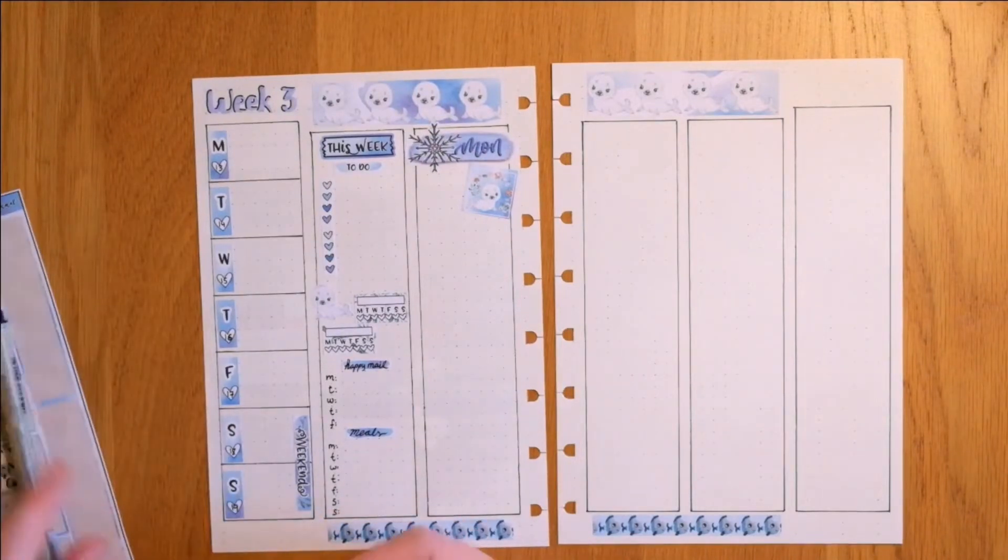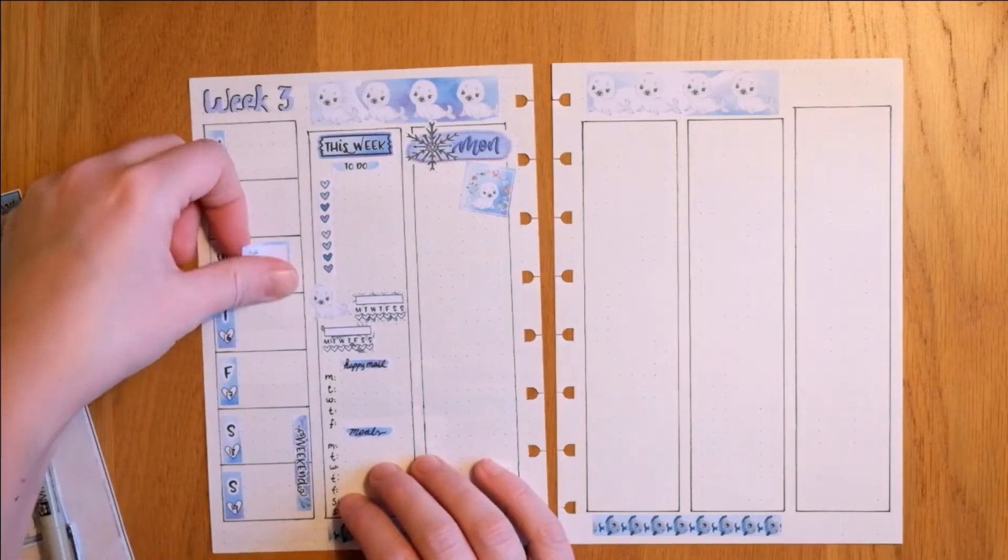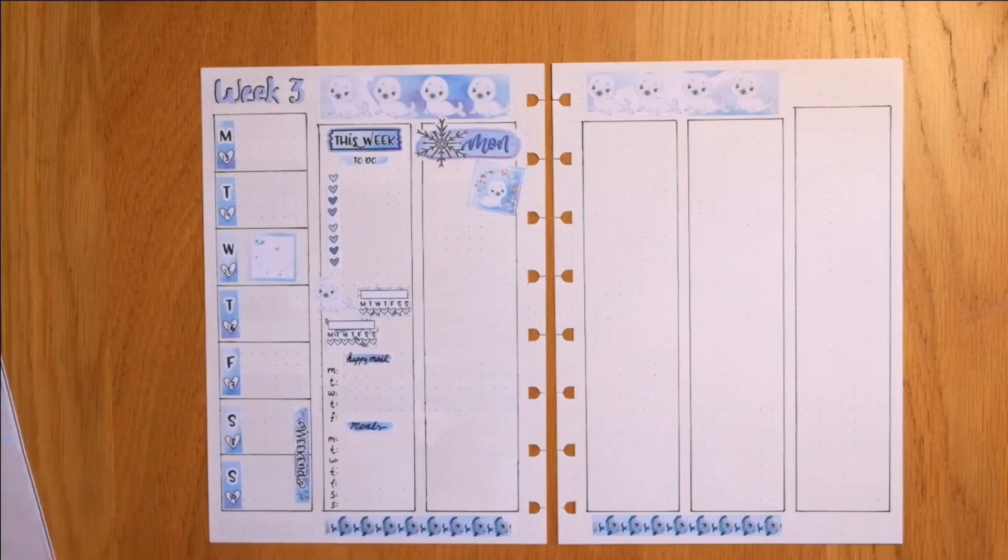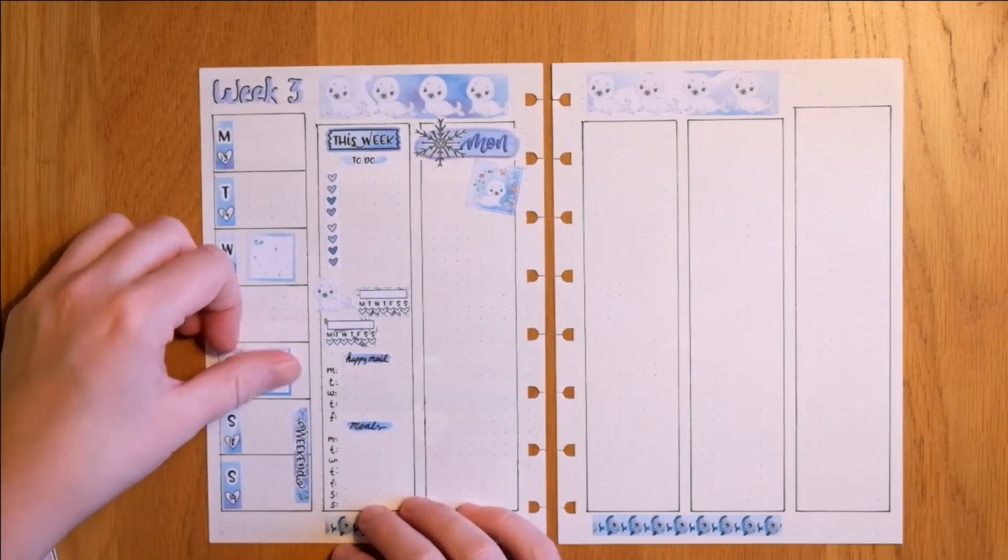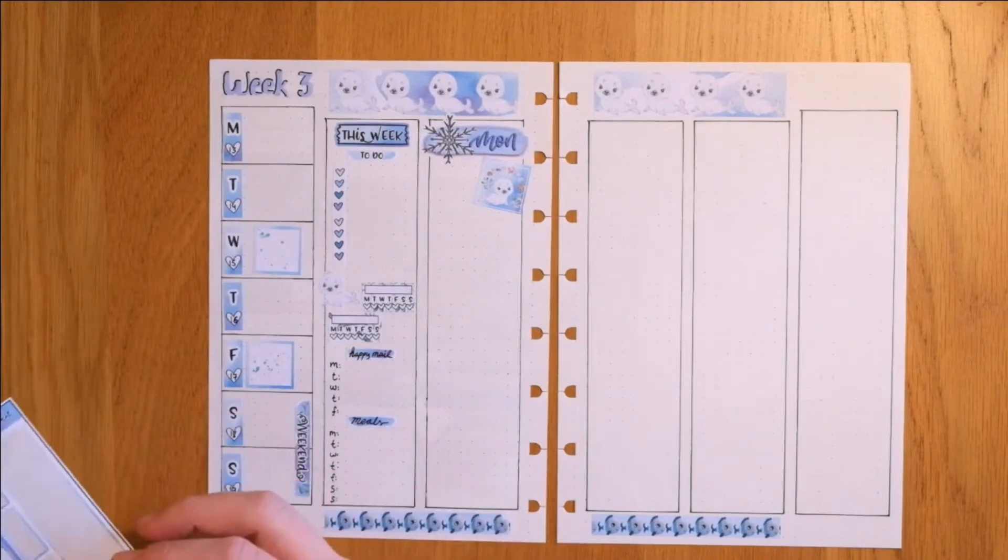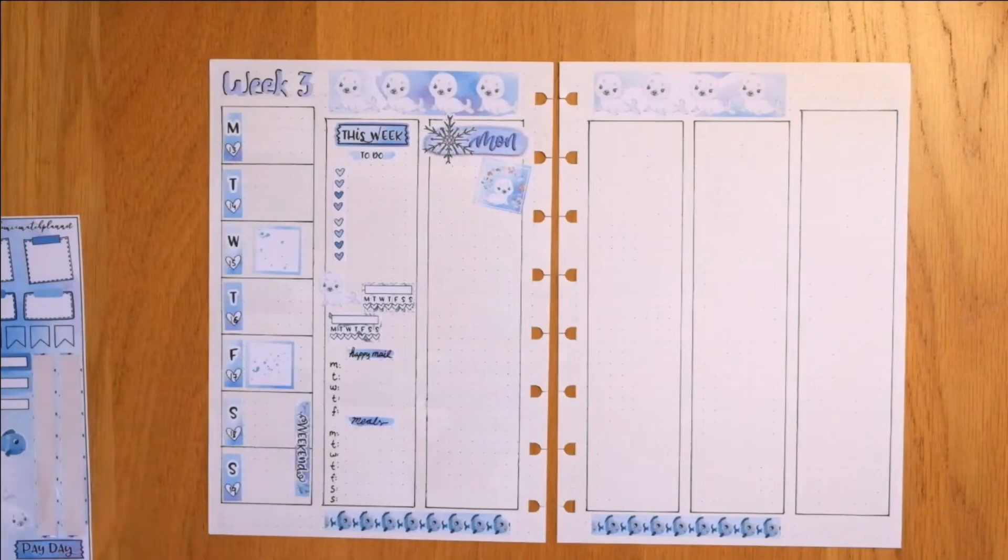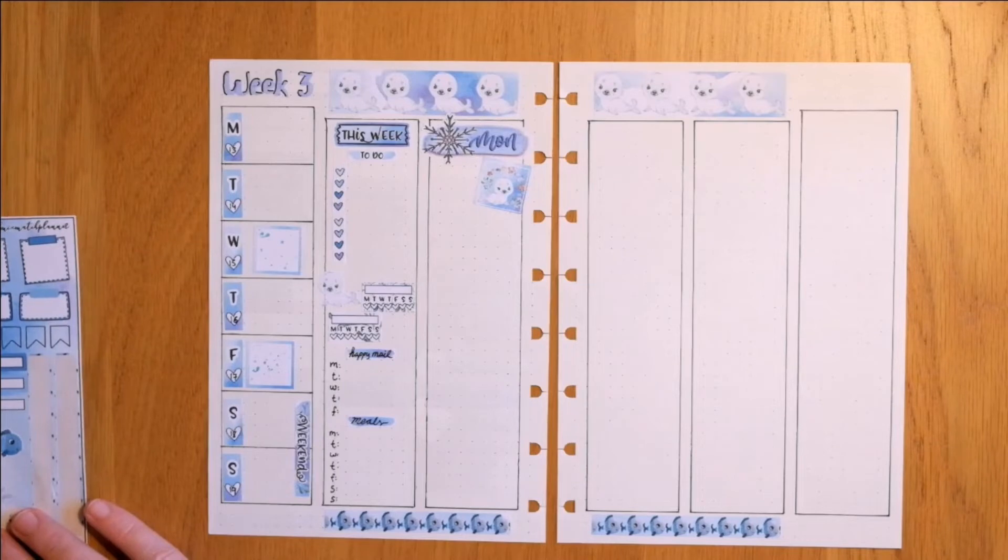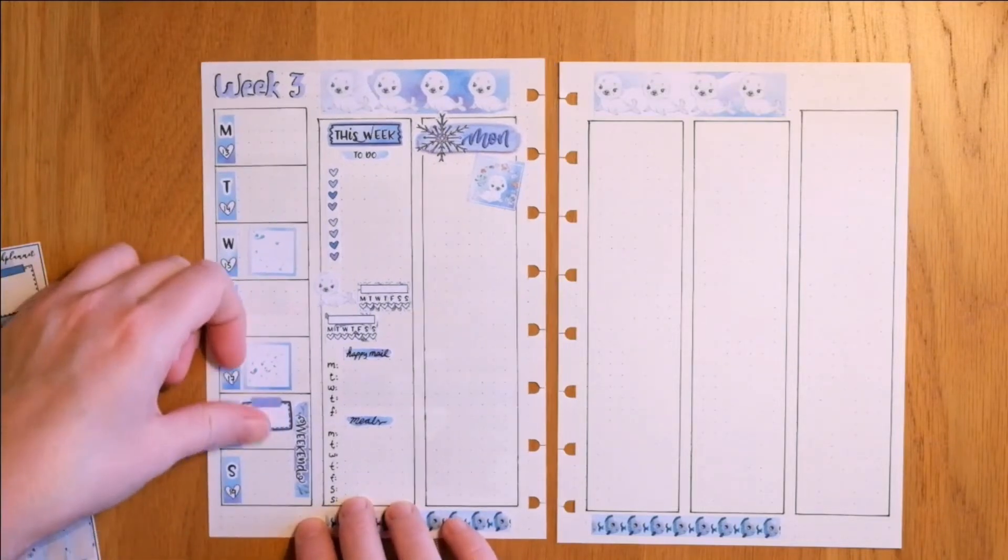And then I add some stickers normally that have something to do with whatever they're stuck besides. This coming week, my boyfriend has his guitar lessons and I have a game coming in the mail. And that's about it. I work next Saturday, which is one out of every third Saturday. So I tend to mark that down as well with that sticker I'm putting down right now.